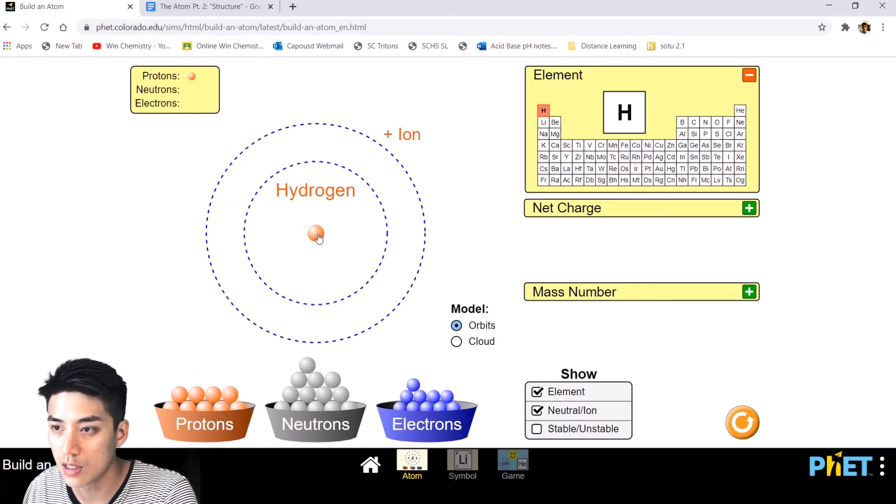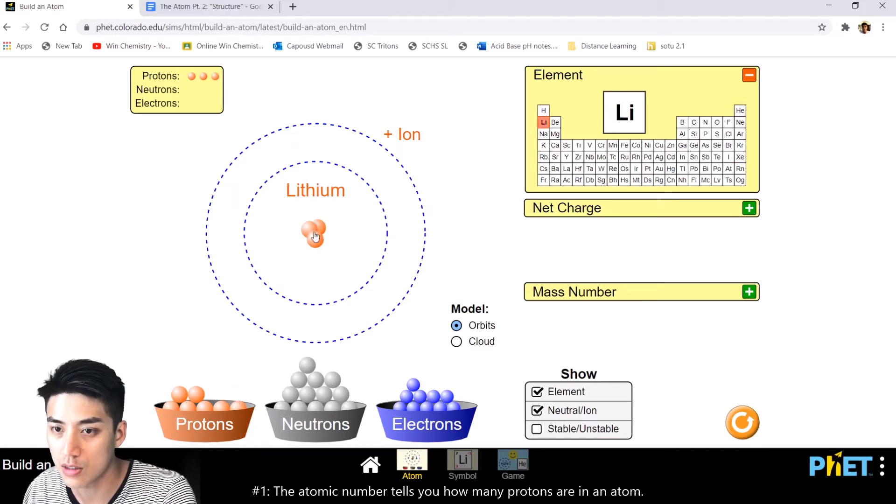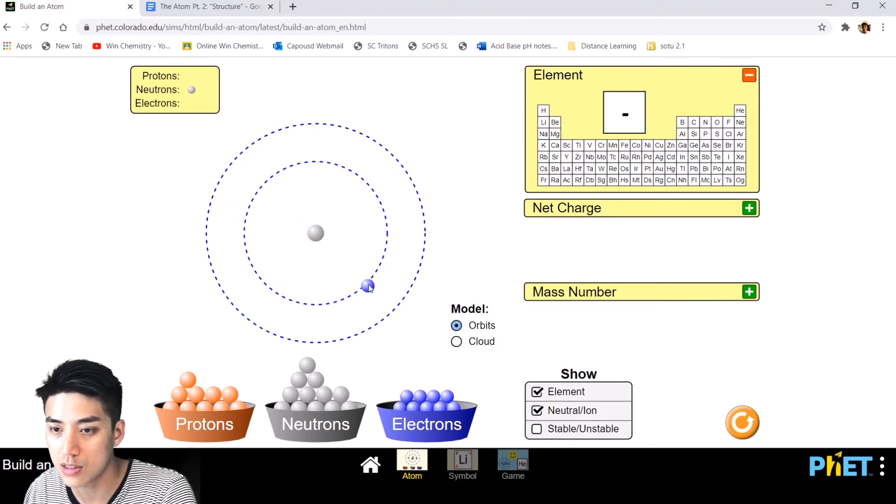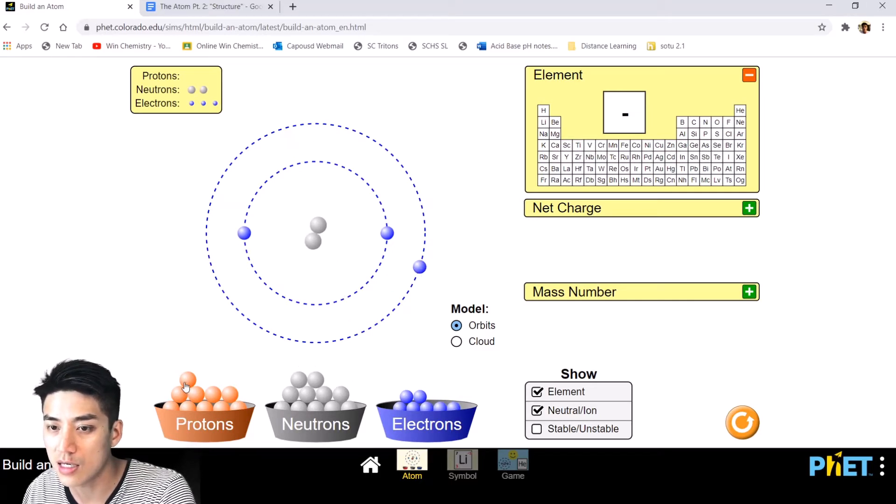One of the first things you have to understand is the number of protons determines the atomic number. So something with three protons has an atomic number of three. Something with four protons, like beryllium, has an atomic number of four. Now, if I reset this thing and just throw in neutrons or electrons, you can see the element has no identity. It really doesn't matter how many electrons or neutrons I throw in there. Until I get a proton in there, it won't have a name. So now that I have one proton, this thing becomes hydrogen.